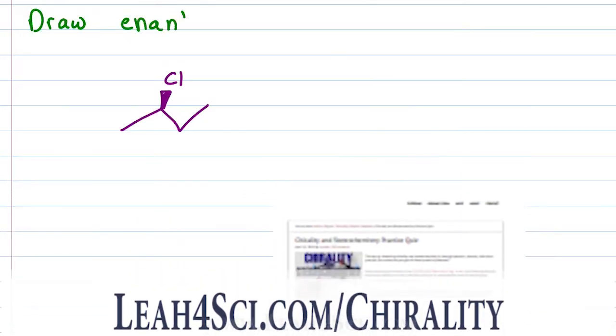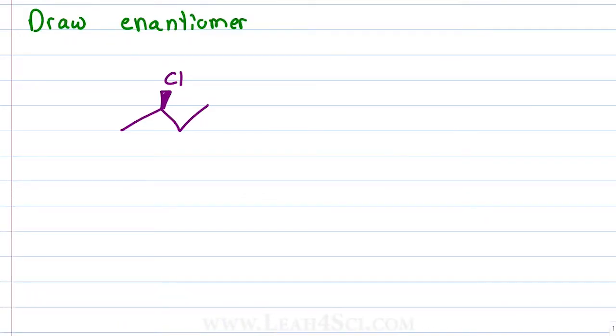Let's start with some warm up problems where we want to draw the enantiomer of a given chiral molecule. In this case, we have a 4 carbon chain with a chlorine on carbon 2 coming forward. That tells us the chiral carbon is carbon number 2. We have two easy ways to draw the enantiomer: we can either use the swap method to simply swap the chiral center or we can draw the mirror image by dropping a mirrored plane next to the molecule and drawing the other one in reverse.